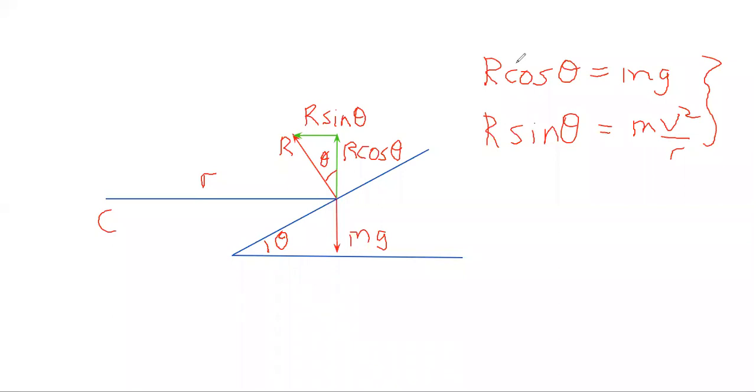So if we divide these two equations so that R drops out, we get that tan theta is MV squared over R over MG. So the Ms cancel, and we get V squared over R over G. Therefore, V squared is GR tan theta, and that's basically the final result.